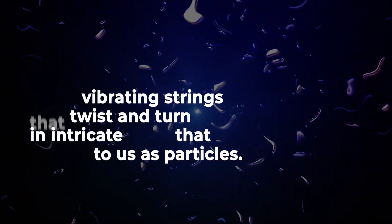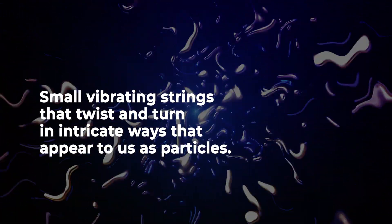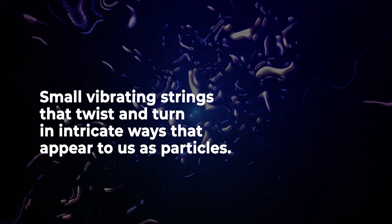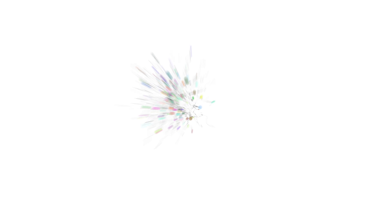String theory rewrites the traditional universe description by replacing all matter and force particles with only one element - small, vibrating strings that twist and turn in intricate ways that appear to us as particles. A photon may be formed by a string of a specific length striking a specific note, and a quark could be formed by a string folded and vibrating at a different frequency.